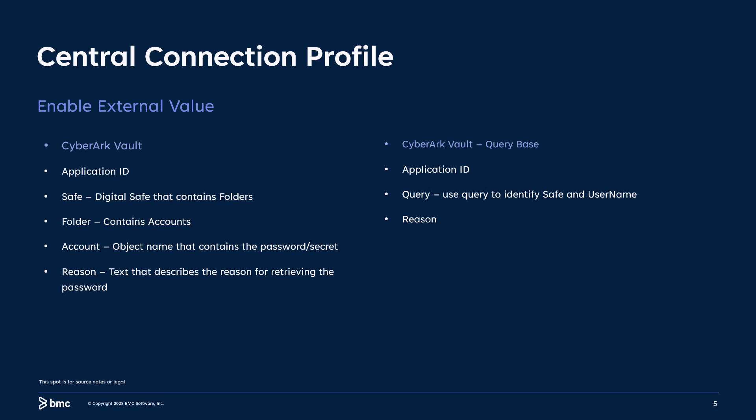In the Central Connection Profile, when enabling External Vault on a password data type, you have two options to retrieve the password: one, CyberArk Vault, and two, CyberArk Vault using Query-Based. With CyberArk Vault, you need to define the Application ID, the safe name, the folder name, and the account where the password resides. With query-based definition, you specify in the query field a string with the name of the safe followed by a colon and then the username.